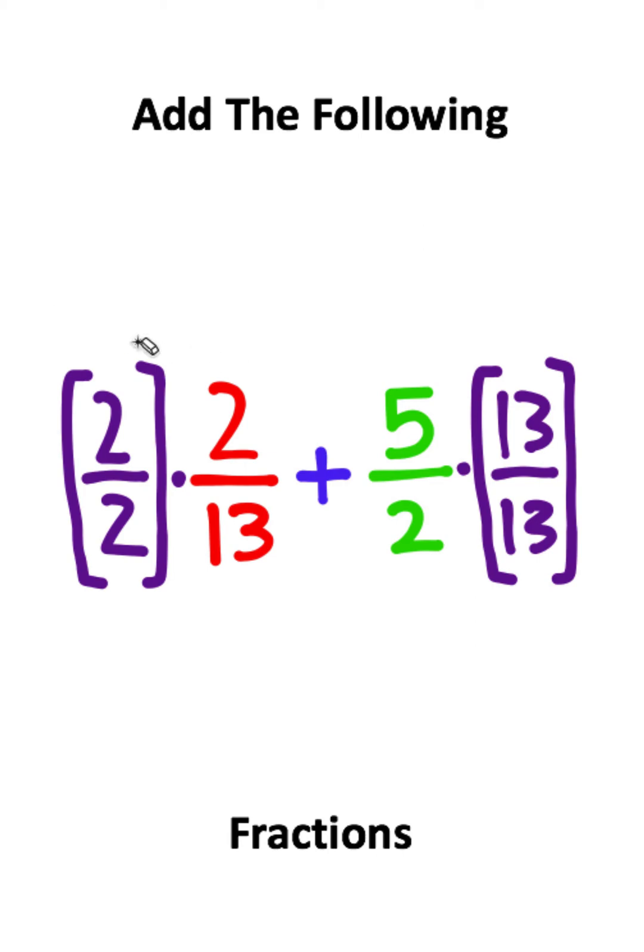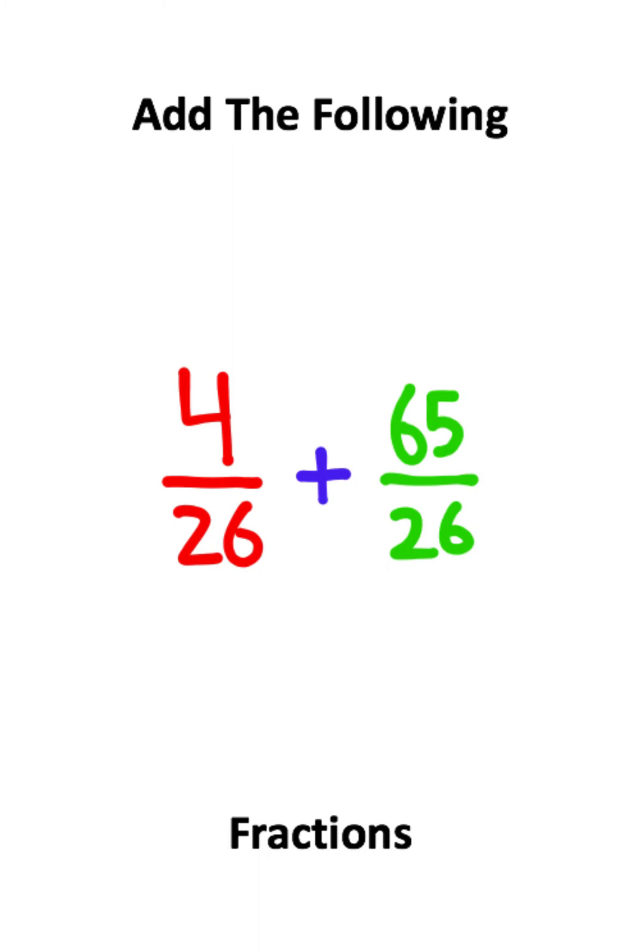Now what I'm going to do is multiply these numbers, so we have two times two over two times thirteen plus five times thirteen over two times thirteen. I'll end up with four over twenty-six plus sixty-five over twenty-six.